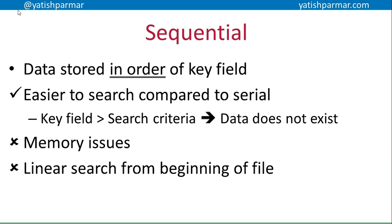That meant it was easier to search compared to a serial file, because if the key field returned was larger than your search criteria — for example, you were searching for five but returned six — it meant the data you were looking for did not exist in the file. However, the problem was that it was a linear search from the beginning of the file, so if what you were looking for was at the end, it was going to take absolutely ages.